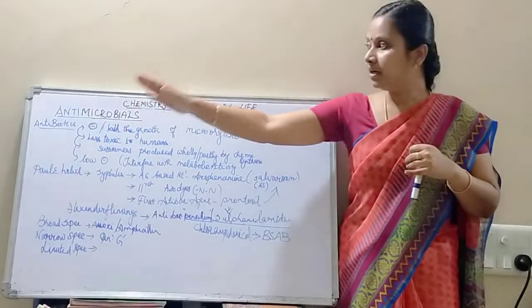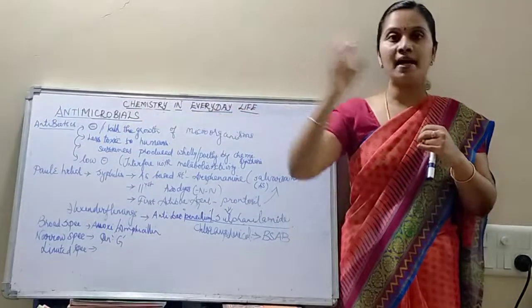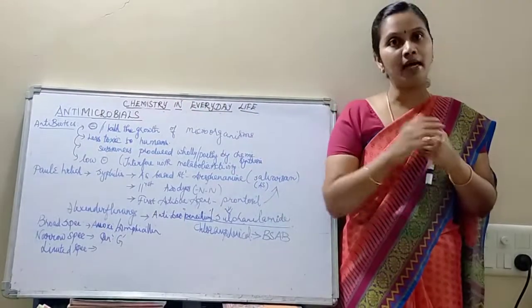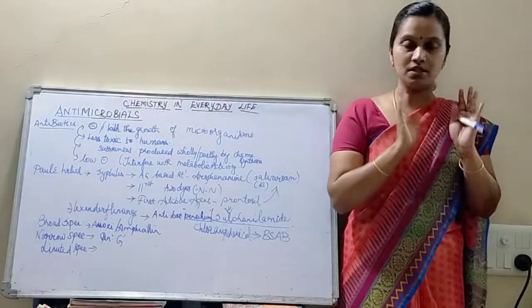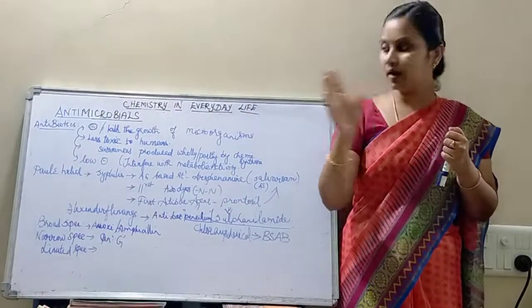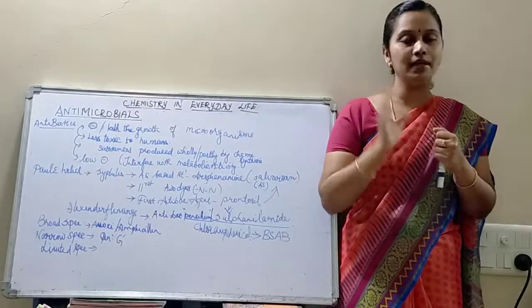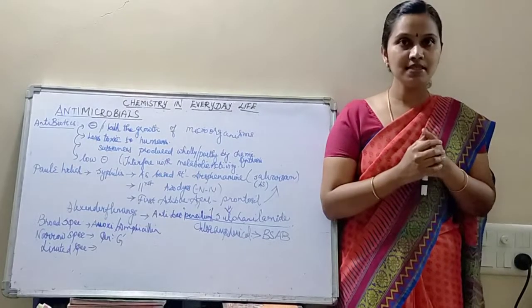It depends on the balance between the viral army and the immune system army. When the viral army dominates, it results in death. When the immune system dominates, the person is able to survive. I have related antiviral and antibiotic concepts to this. Hope you understood about antibiotics very clearly. Thank you.